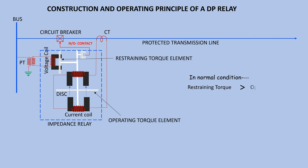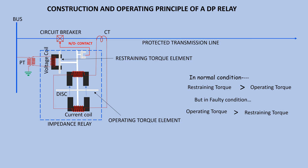In normal operating condition, restraining torque is more than operating torque, hence the relay will not operate. But in faulty condition of the line, the current becomes quite large whereas voltage becomes less. Consequently, operating torque becomes more than restraining torque and the dynamic part of the relay starts moving, which ultimately closes the inner contact of the relay to operate protection and finally causes opening of the circuit breaker meant for the line.